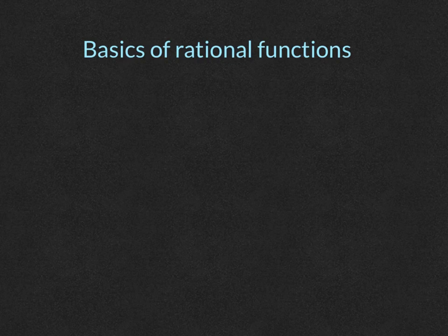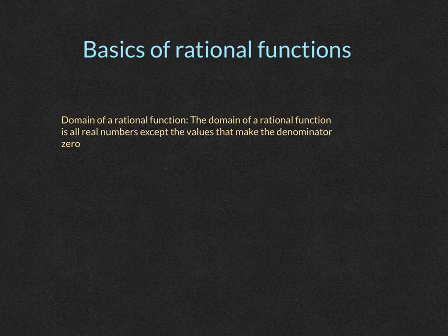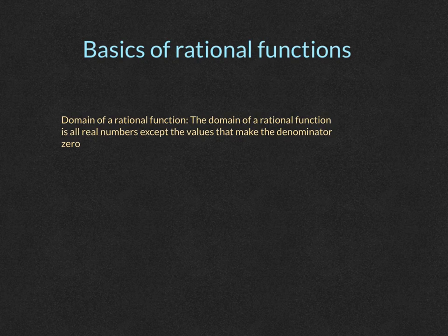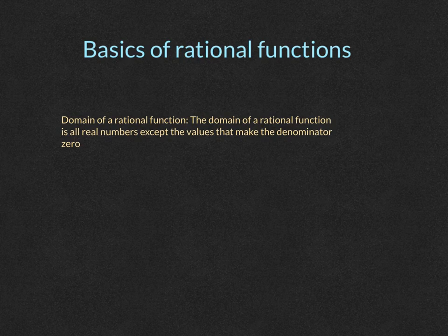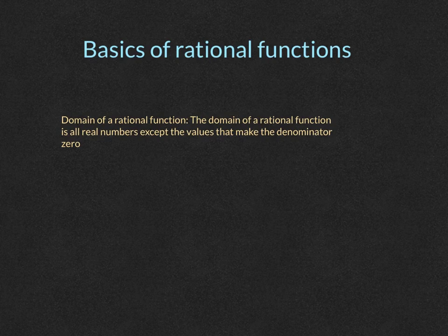So first, let's take a look at the domain. The domain of a rational function is all real numbers except for the values that make the denominator equal to zero. To find the domain of a rational function, we find the restriction values by taking the denominator, which is x minus seven.